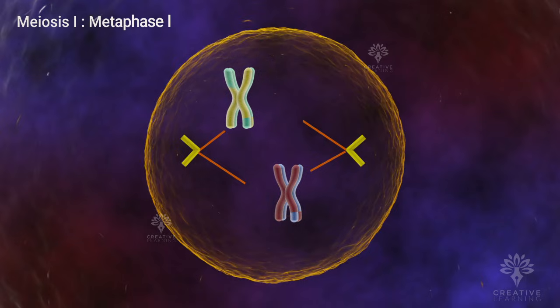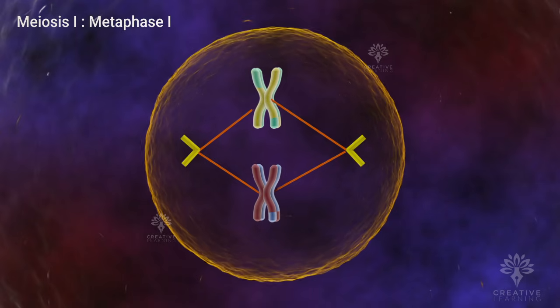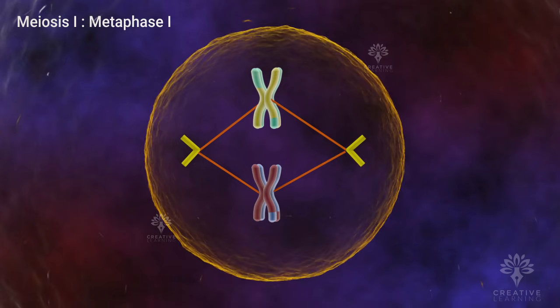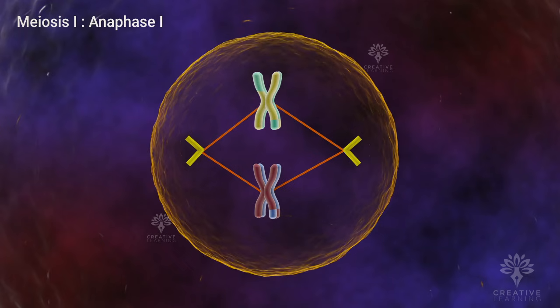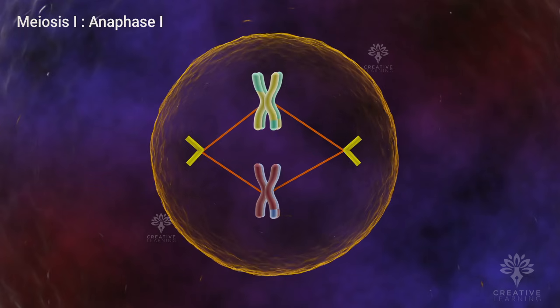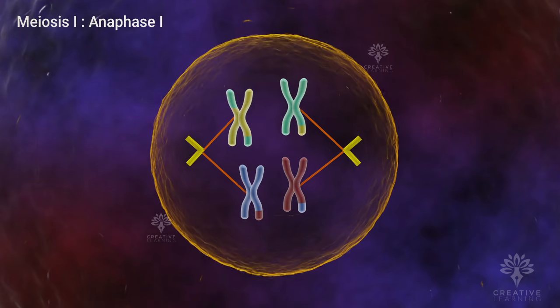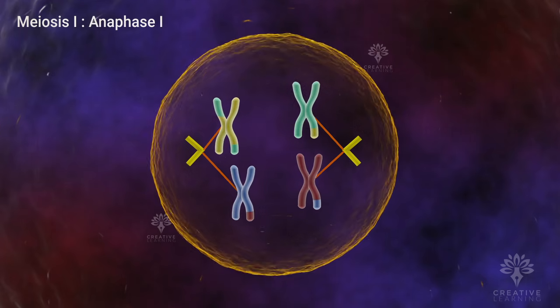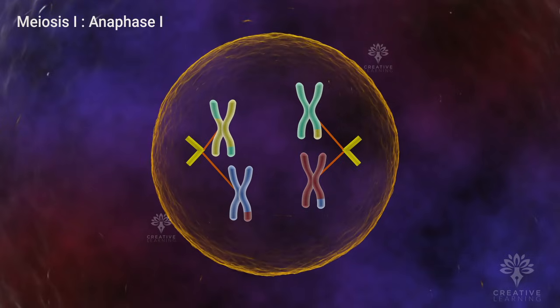Metaphase I is the moment of alignment, where homologous chromosomes line up at the cell's equator. Then comes anaphase I, and the spindle fibers diligently separate the homologous chromosomes in each tetrad, pulling them to opposite poles of the cell.